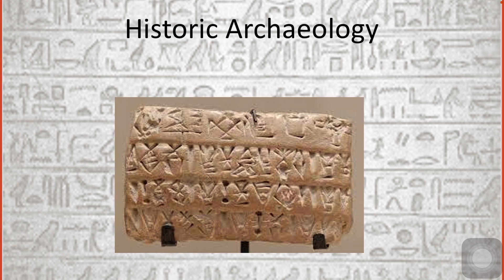Archaeologists used the carved languages and were able to translate them, which vastly contributed to our understanding of Egyptian history. Historic archaeology also contributes to religious studies. The Dead Sea Scrolls, for instance, are a collection of about 900 documents found between 1947 and 1956 in 11 caves near the West Bank, containing texts from the Hebrew Bible written in Hebrew, Aramaic, and Greek — the oldest versions of biblical text ever found, dating from the 3rd century BCE to the 1st century CE.